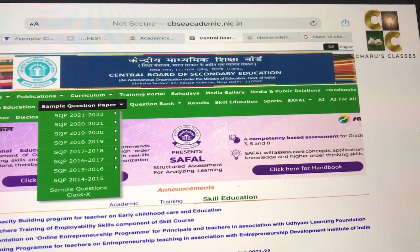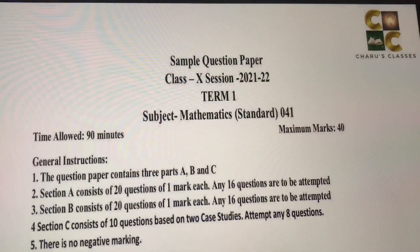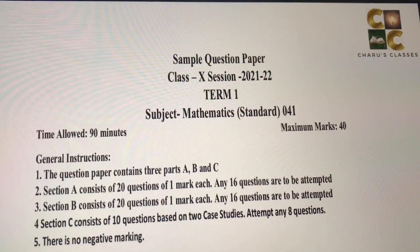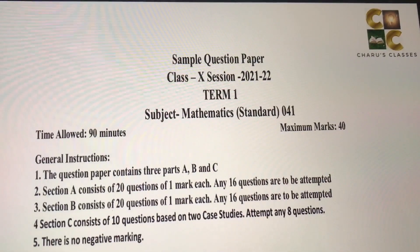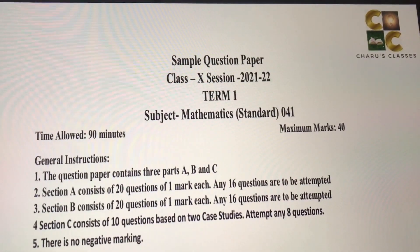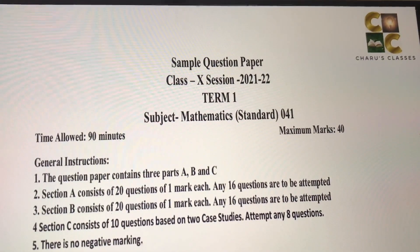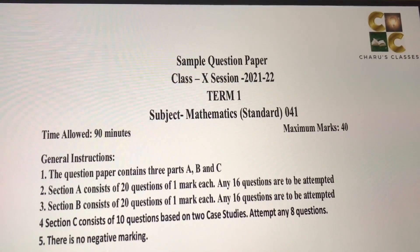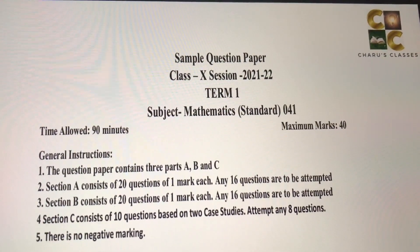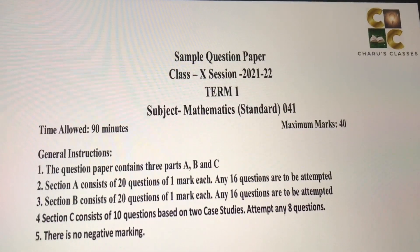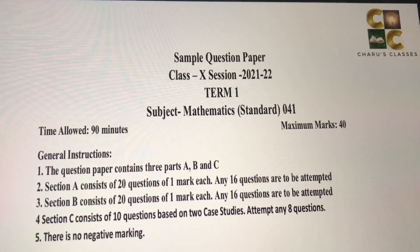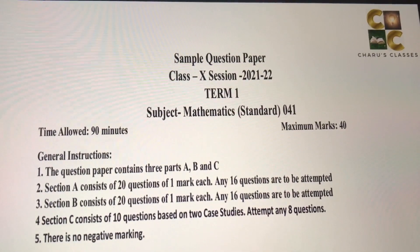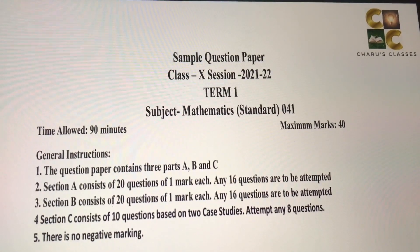Let's see what is the pattern of this question paper. Maths paper is divided into 3 parts: A, B and C. In these parts, there are 20 questions, they are all of 1 mark, and you need to attempt any 16. That means you need 16 questions to solve. In section B, there are also 20 questions, and there are 16 questions you need to do.